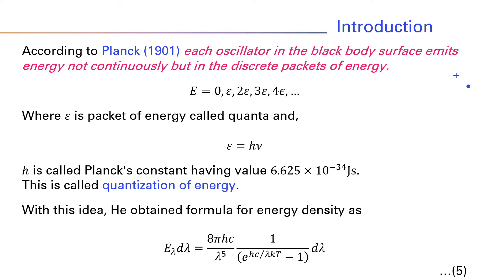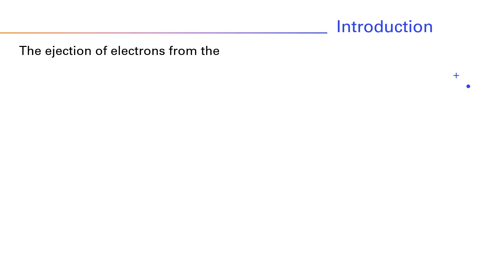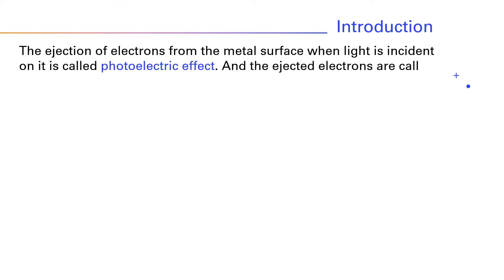It was observed by Lenard that when ultraviolet light was incident upon a metal surface like aluminum, electrons are ejected from the surface. The ejection of electrons from the metal surface when light is incident on it is called photoelectric effect.